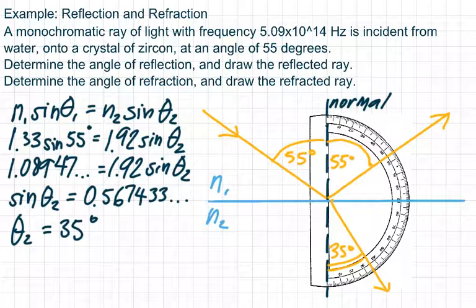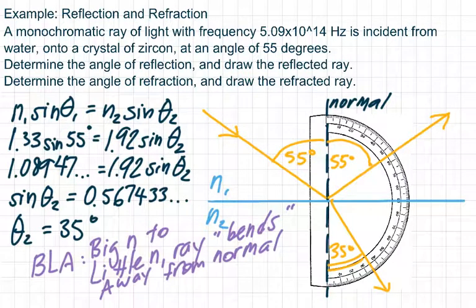Now you know you're on the right track because remember the mnemonic: big index to little index, the ray bends away from the normal. I'm not going from big to little, I'm going from little to big - from 1.33 to 1.92. So the ray, instead of going straight like if there was no refraction, would just keep going in a straight line. But there is refraction. If I went from a large index to a smaller index, the ray would bend away from the normal. But that's not the case. We're going from a small index to a larger index, so the ray is going to bend inwards as shown.